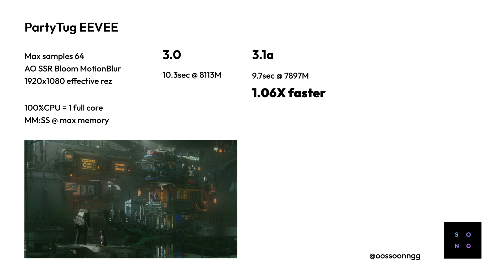The final scene is Party Tag, which uses EEVEE — no ray tracing, just the standard EEVEE renderer. I was curious whether Blender 3.1 Alpha with Metal makes any difference here. Blender 3.0 finished in 10.3 seconds using about 8 GB of RAM. Blender 3.1 Alpha finished in 9.7 seconds using about 200-300 MB less memory — roughly 6% faster. It was using ambient occlusion, screen space reflections, and motion blur — stuff that was very slow on Macs a year ago.